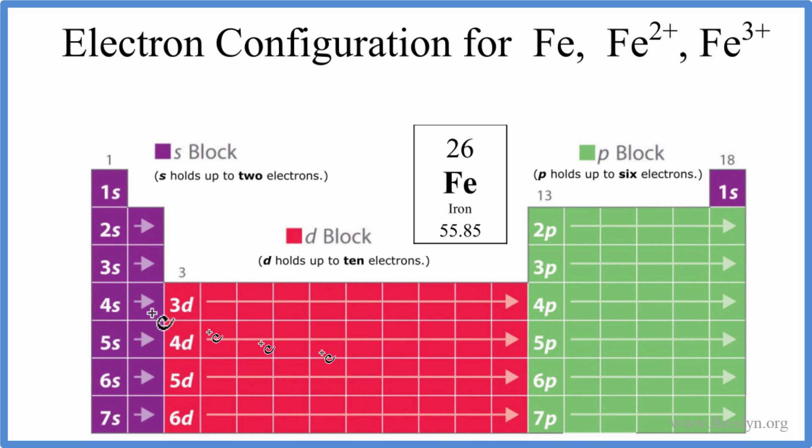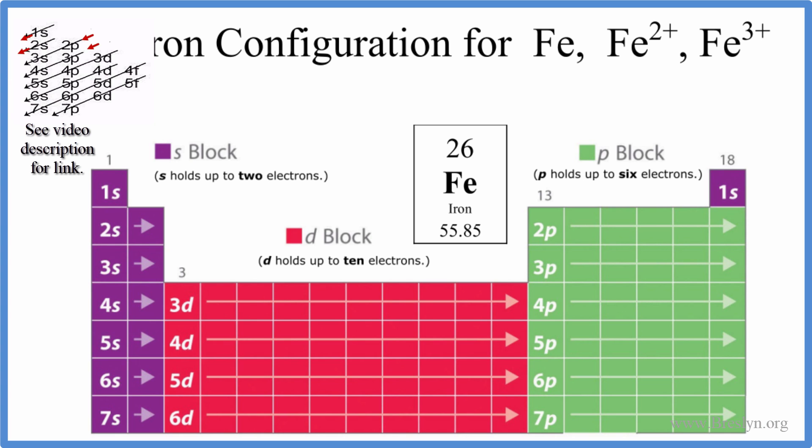We'll use this periodic table broken up into orbital blocks to help us write the configuration. You can also use this chart here. There's a link in the description on how to do that. I think this is a better way to do it though. So let's get started.